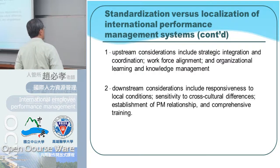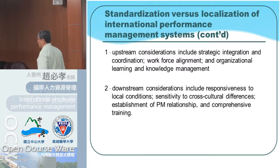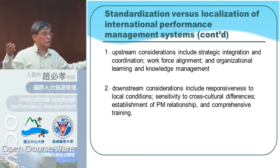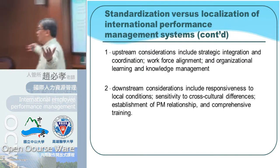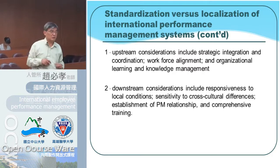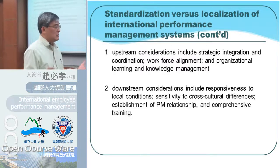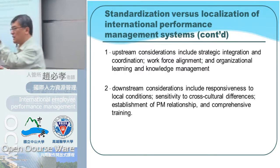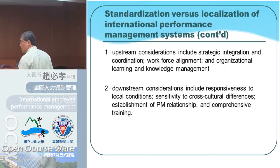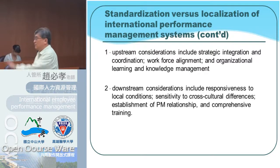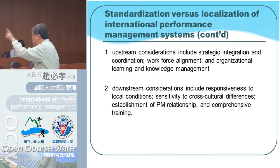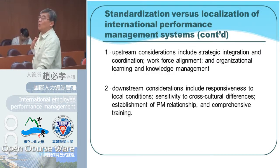There's also workforce alignment — how to link the foreign subsidiary manager to the company's goal — and organizational learning and knowledge management. The company needs to learn from different markets, and how to let all the foreign workforces respond to the company's system. For example, when customers require different services, can your PN system assess the performers — the local employees? IBM asks all their employees, no matter in Hong Kong or in any foreign country, that 15% of their performance credit comes from their own idea.